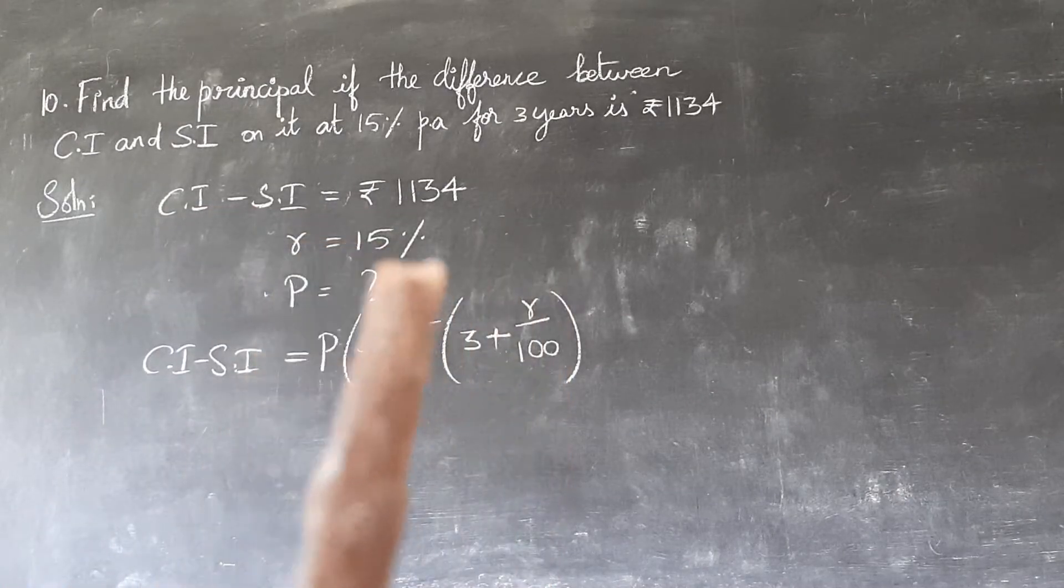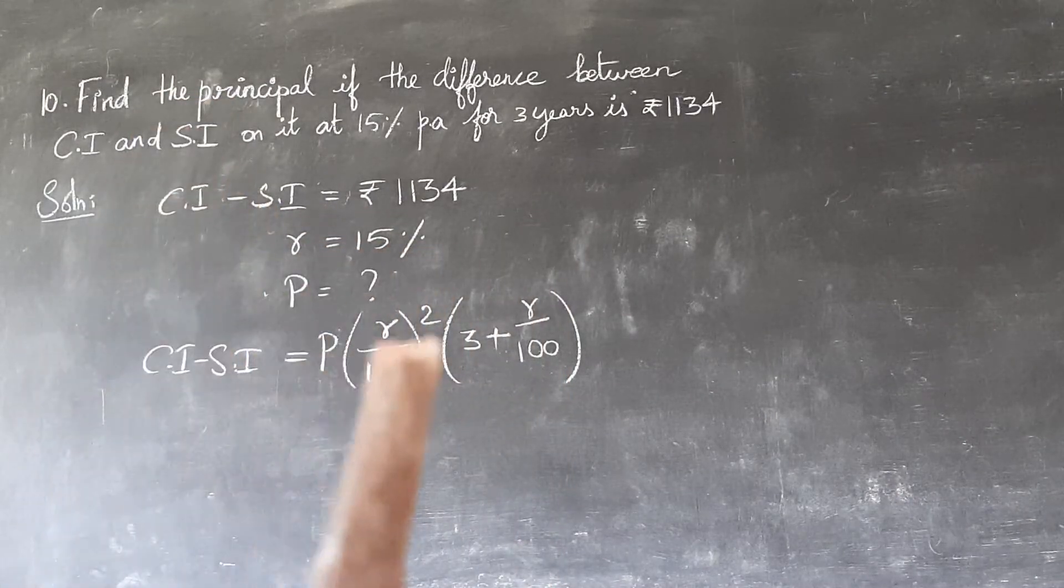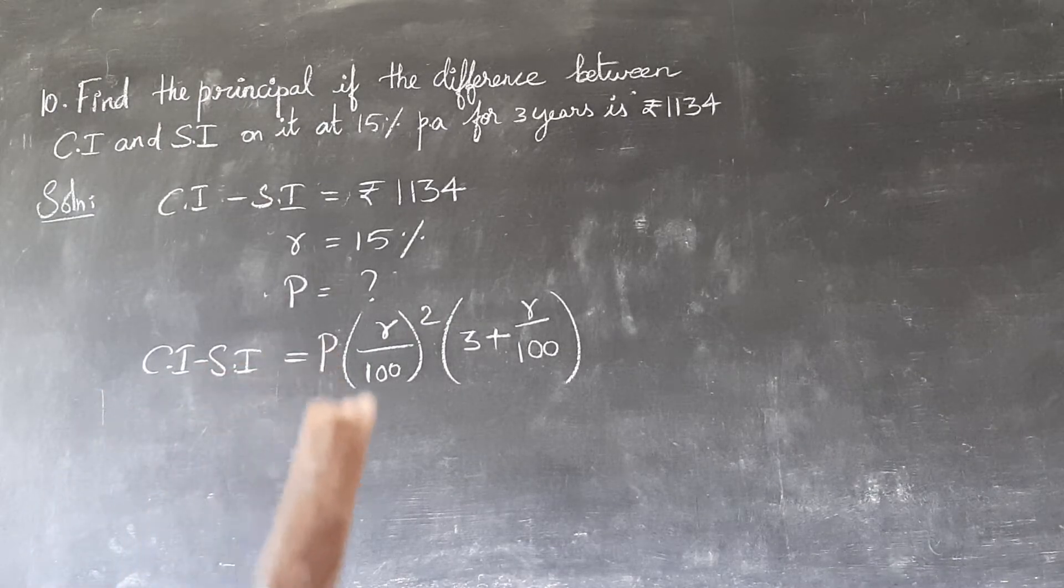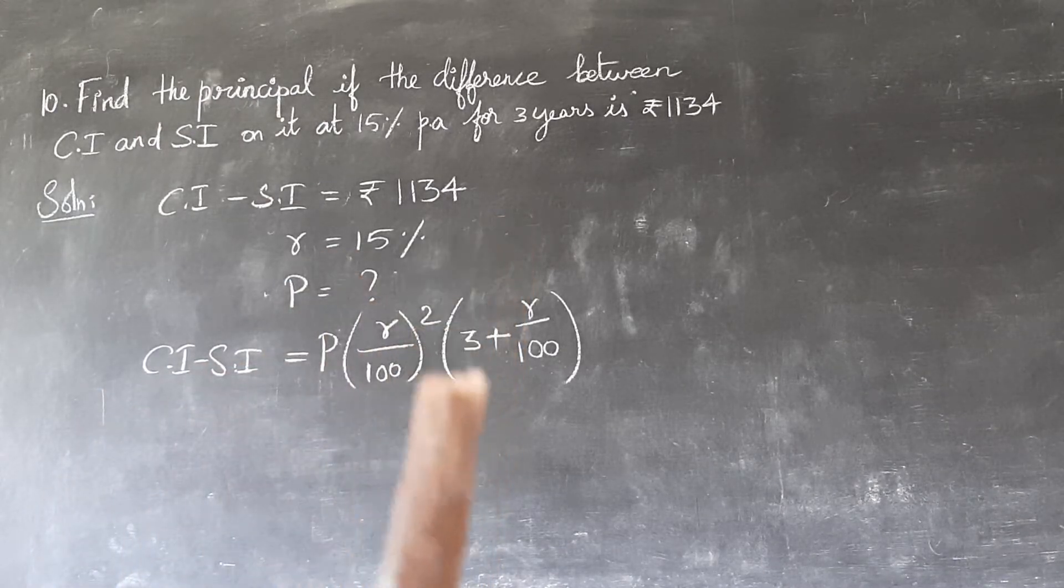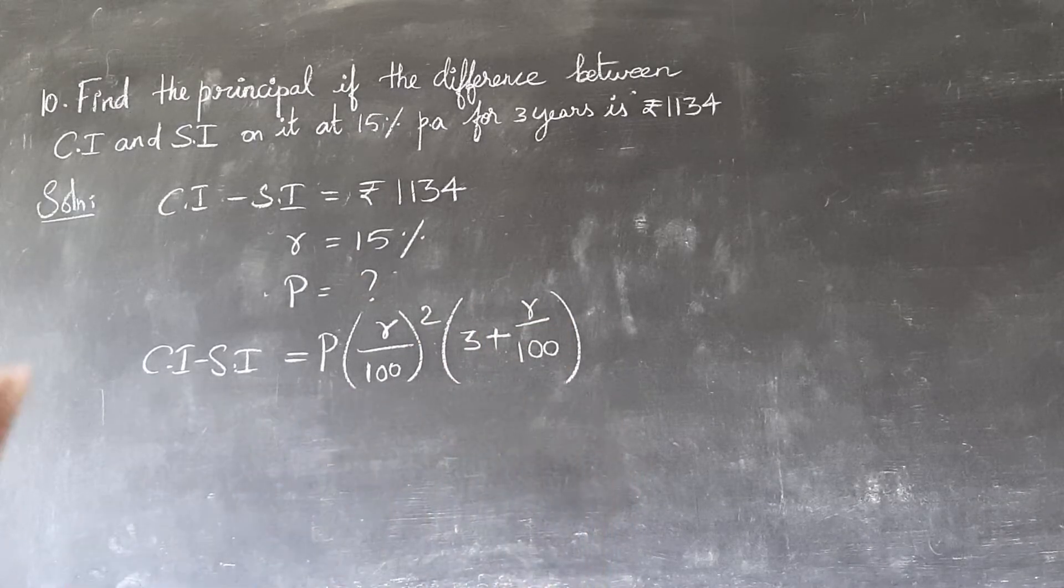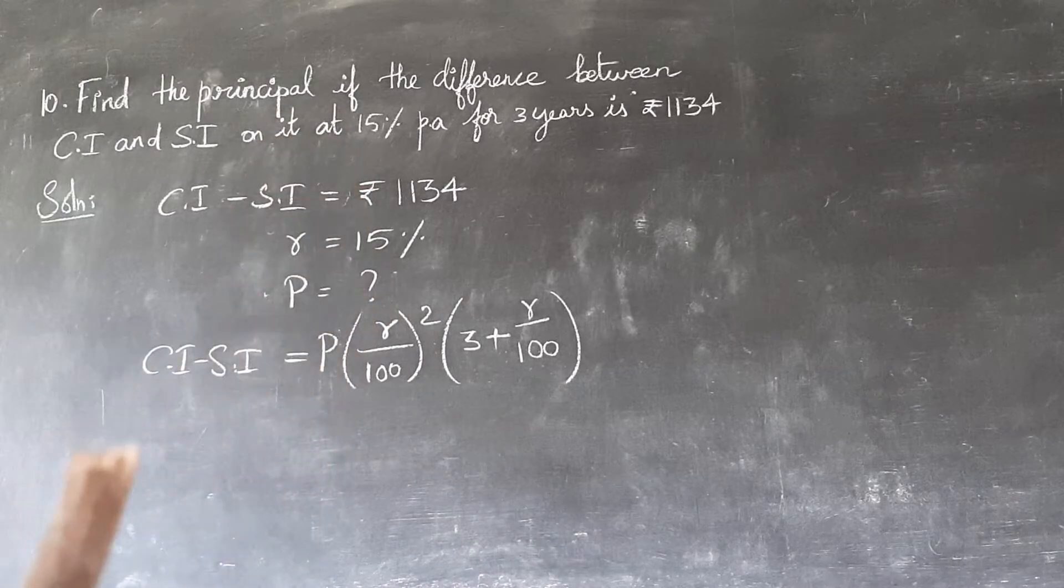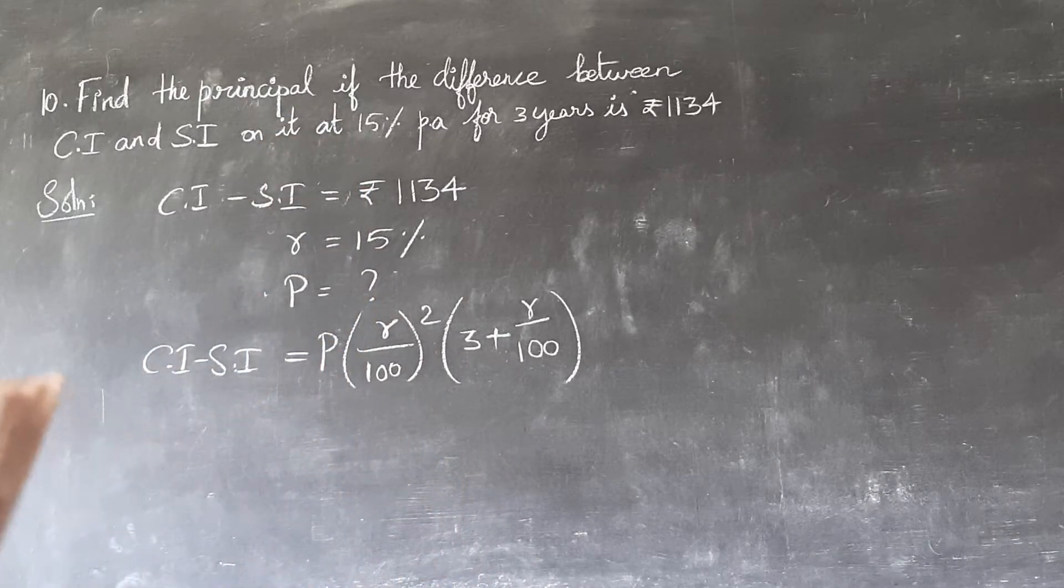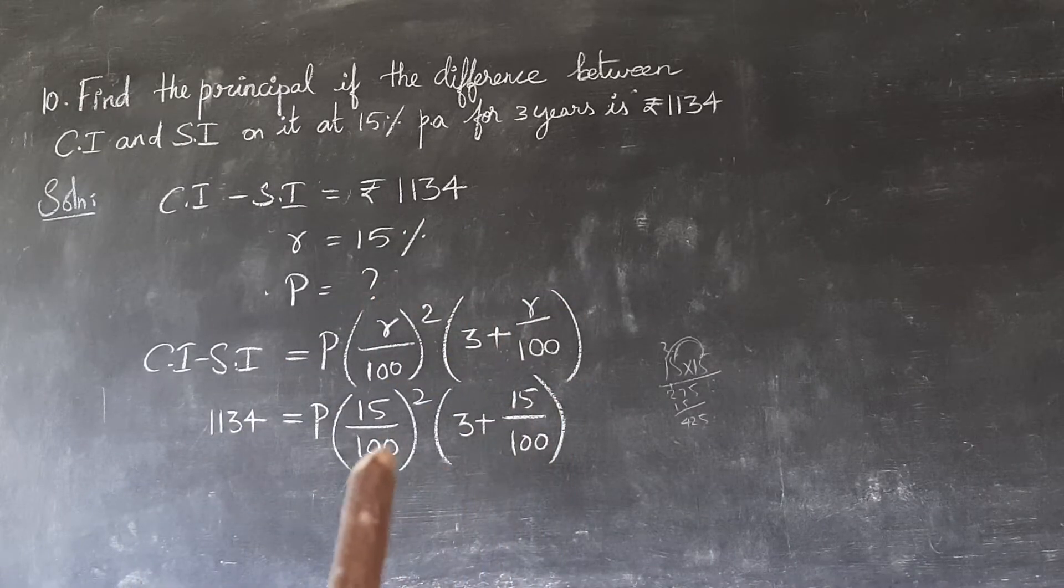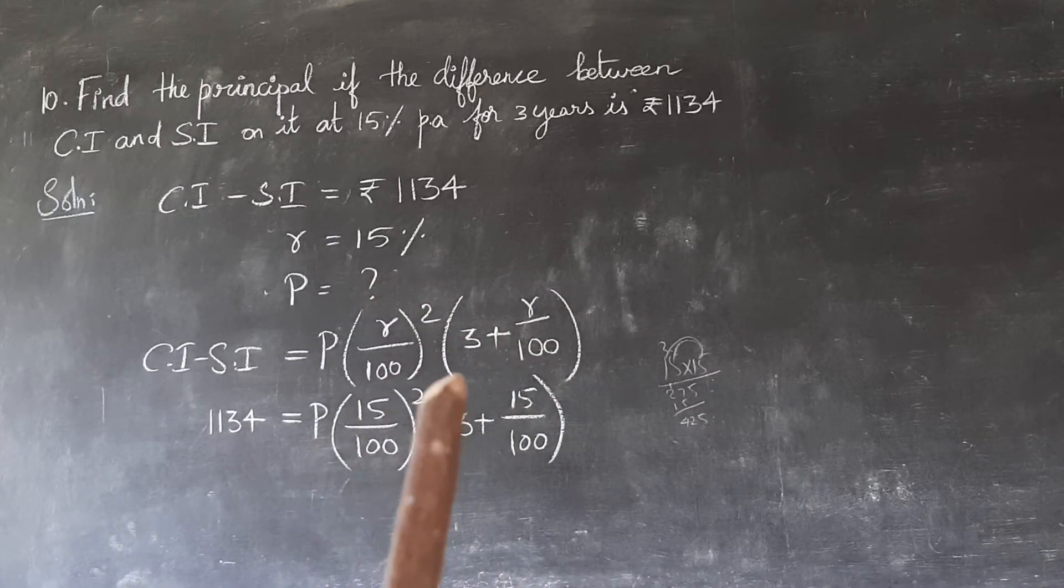For the difference and rate of interest to find the principal, the formula is: CI minus SI equals P times (r/100) squared times (3 + r/100). Now in the formula, we have values, so let's substitute them.